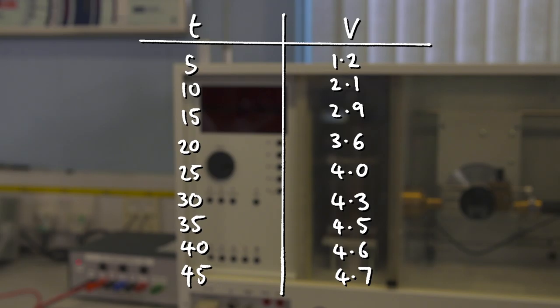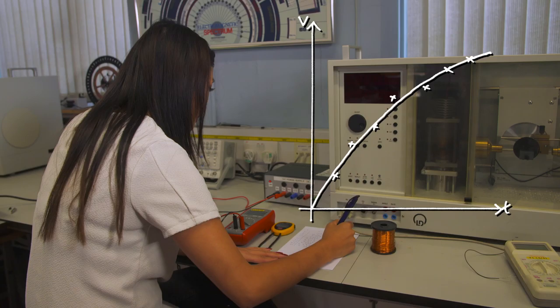We can see that voltage increases exponentially with time. The curve can be described by the following equation,